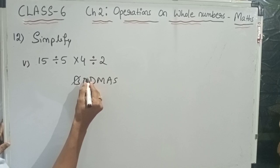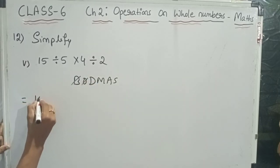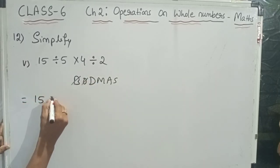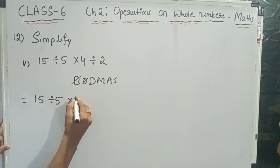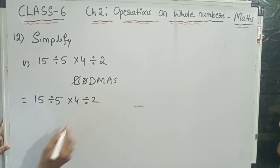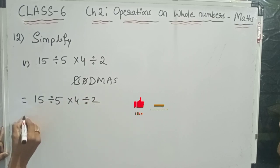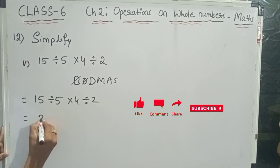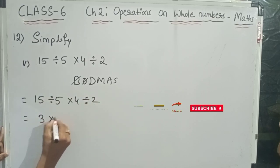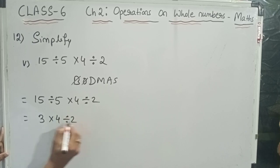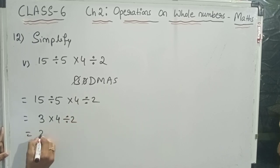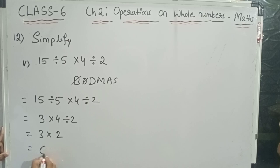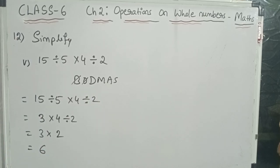For the next question, using BODMAS. Division is there: 15 divided by 5 is 3. The expression becomes 3 into 4 divided by 2. Again division: 4 divided by 2 is 2. Then multiplication: 3 into 2 is 6. So 6 is the answer. Thank you for watching.